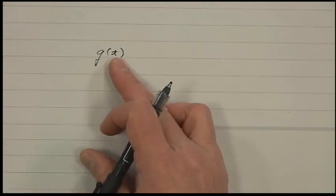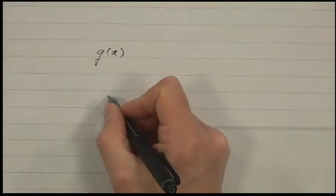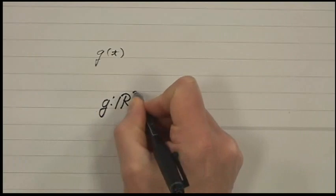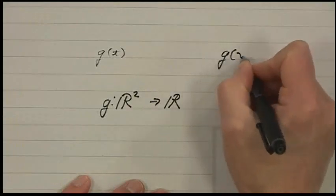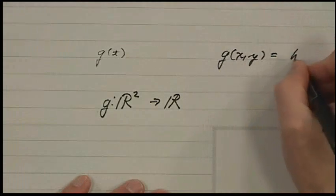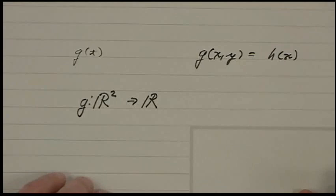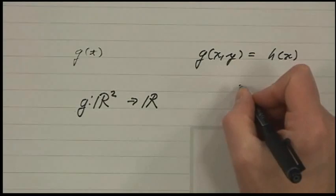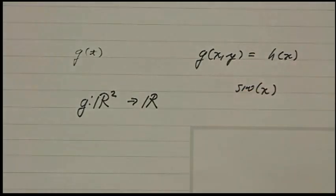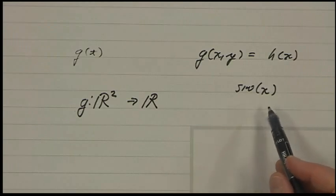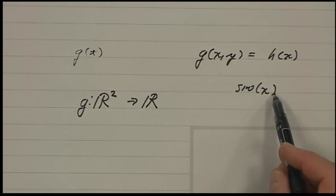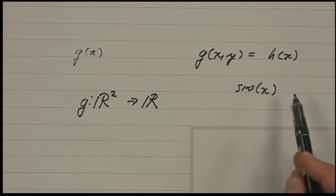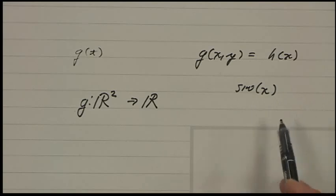If I write g of xy, it could be that g is really only a function of x, and it's constant in the other variable. So if I write sine of x and I say the Fourier transform, do I mean the continuous time Fourier transform or the continuous space Fourier transform? If it's the continuous space Fourier transform, I'm interpreting this as constant in the second variable. If it's the continuous time Fourier transform, it's straightforward. The answers are different — you'll get two different answers.